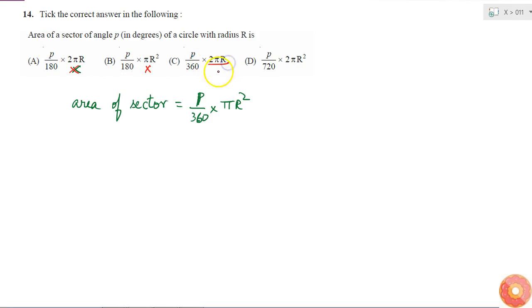Here again I have 2 pi R, so this can't be the answer. So this is the only answer left, but let me check here also. Here I have P by 720 into 2 pi R square. So I know 720 is divisible by 2, so if I divide it by 2 I will get it as 360, right?